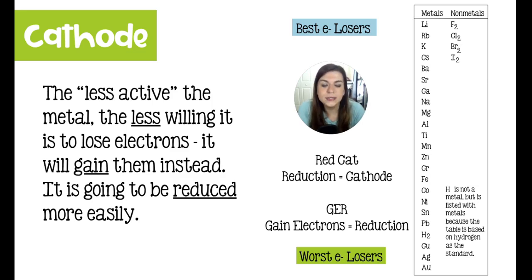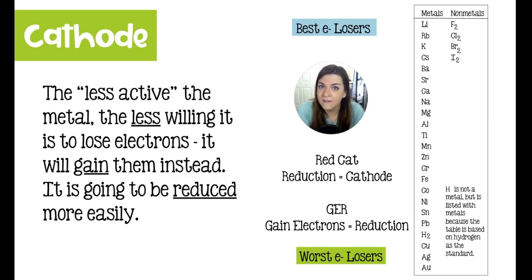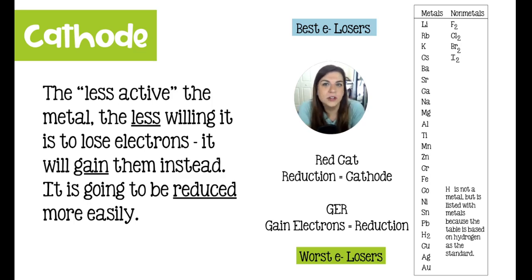The only metals less active than hydrogen are copper, silver, and gold. If you look at the periodic table, all three of those metals can be found in group 11. They are typically called the coinage metals because way back in the day we used to make coins out of copper, silver, and gold. That's because they are very stable metals — they don't really like to be oxidized, they don't tarnish very easily, and they're not super reactive.